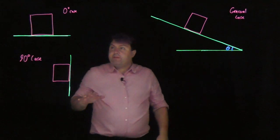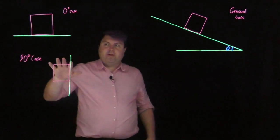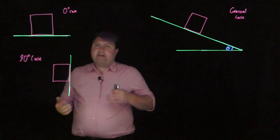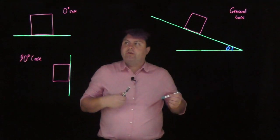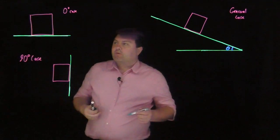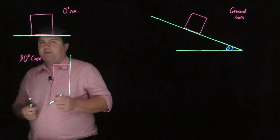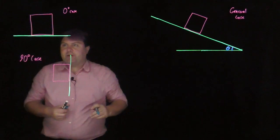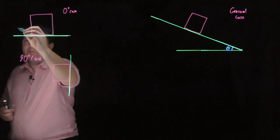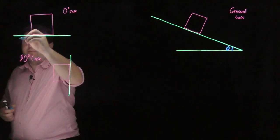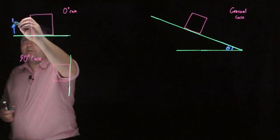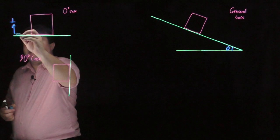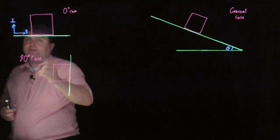Welcome. We have a couple of cases of inclines, and we want to understand how to decompose these into our new coordinate system of parallel and perpendicular. In this zero-degree case, what's perpendicular to the floor is in this direction — we can mark it with the perpendicular sign. What's parallel to the floor, we can mark with this parallel sign.